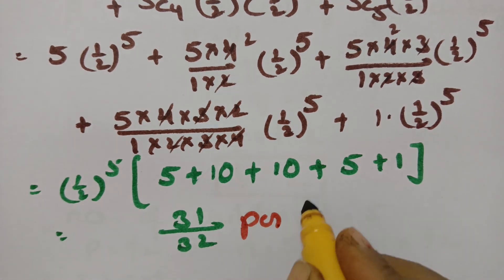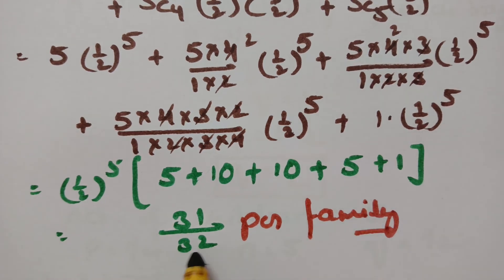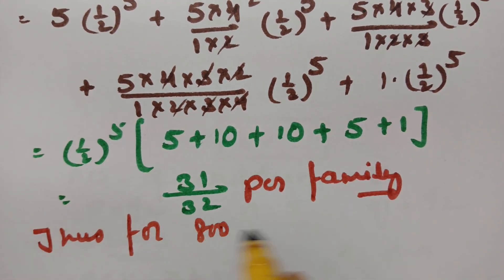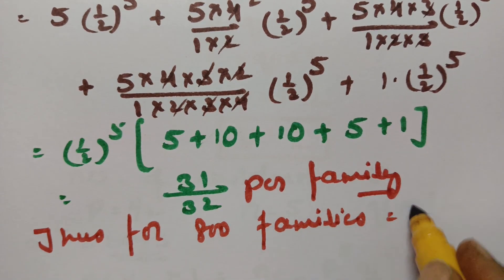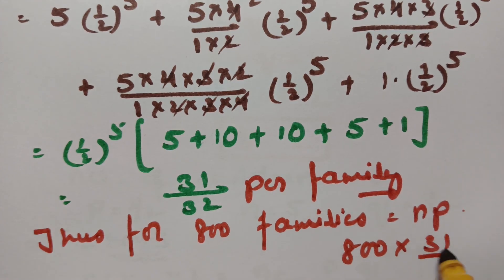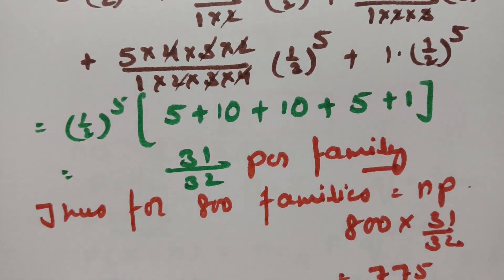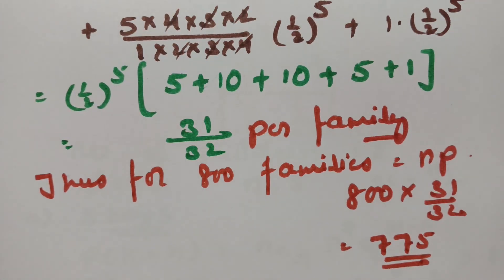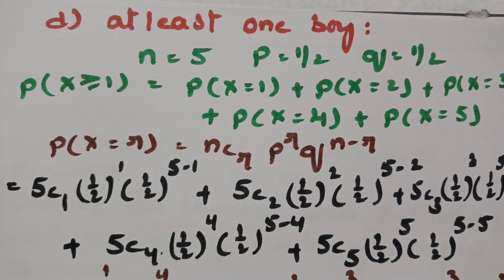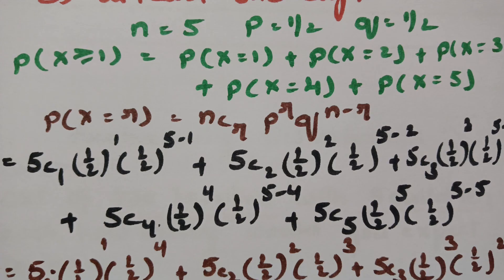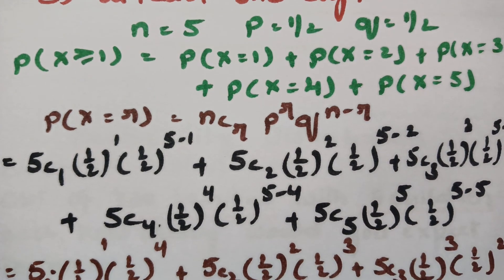For 800 families, the expected number with at least one boy is 800 × (31/32) = 775. So among 800 families, 775 are expected to have at least one boy. If you don't understand, watch the video again step by step and you can solve it on your own. Thank you for watching!